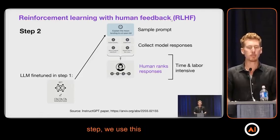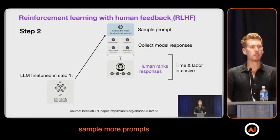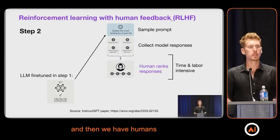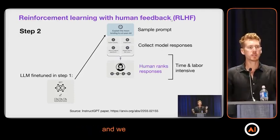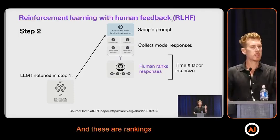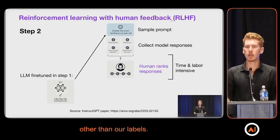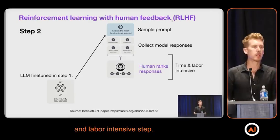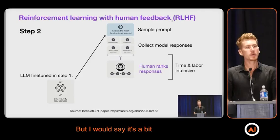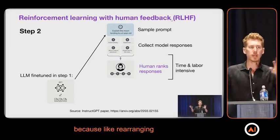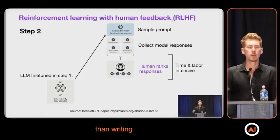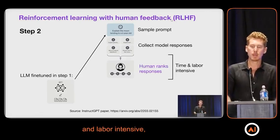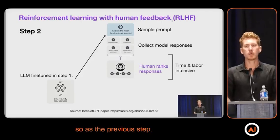As the next step, we use this fine-tuned model to sample more prompts. And then we have humans rate or rank these responses — basically we have multiple responses, let's say four responses, and we rank them from worst to best. These rankings are then our labels. So it's another time and labor intensive step, but I would say it's a bit easier than writing a response, because rearranging the order of what is worst and what is best is slightly easier than writing the response in the first place. So it's still time and labor intensive, but maybe less so than the previous step.